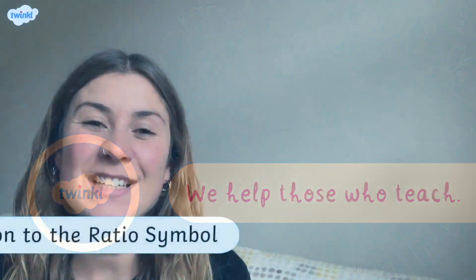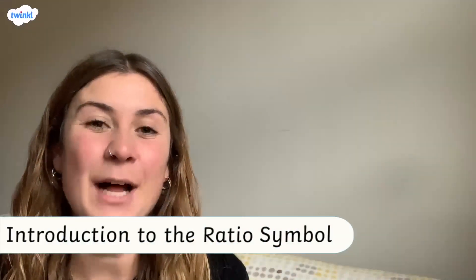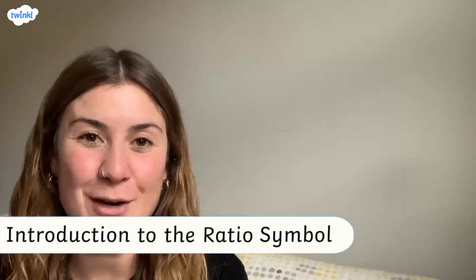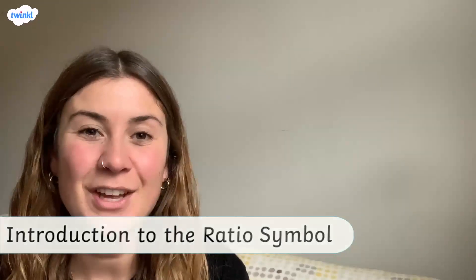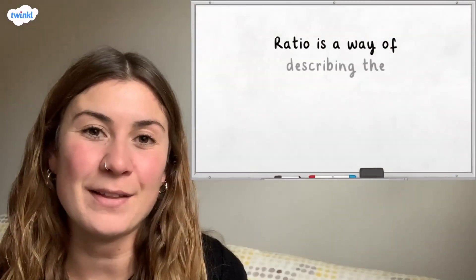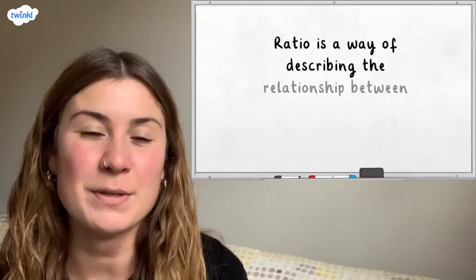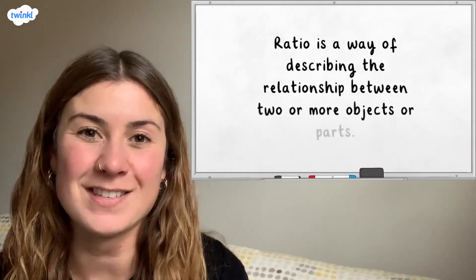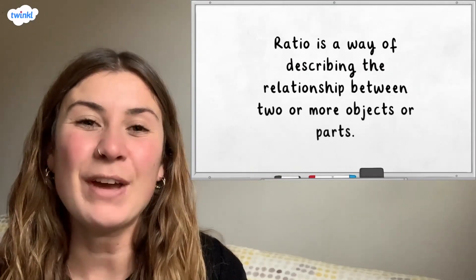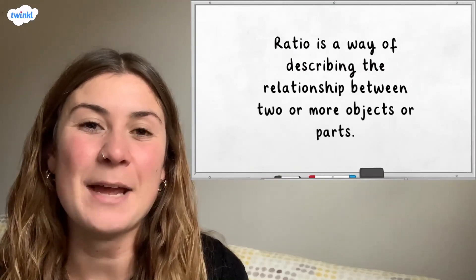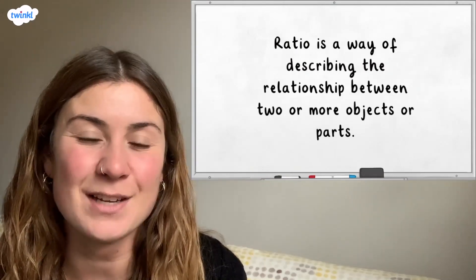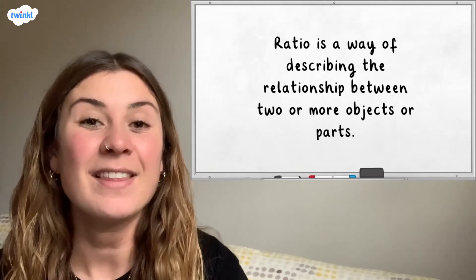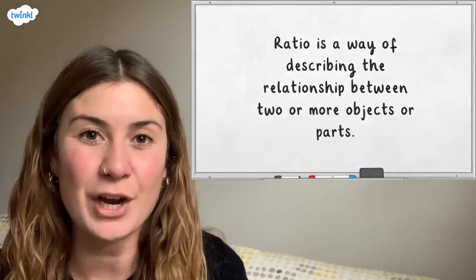Hi, this video is here to help you understand and use the ratio symbol. Ratio is a way of describing the relationship between two or more objects or parts. If you haven't already, it might be a good idea to watch our video explaining the language of ratio first.